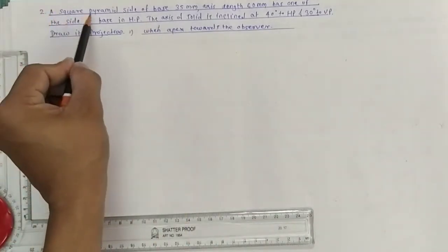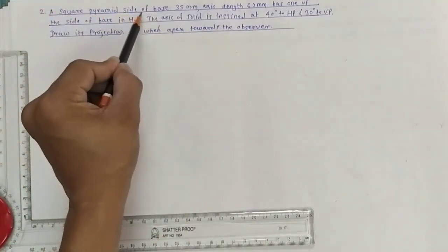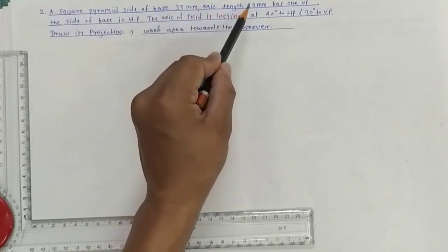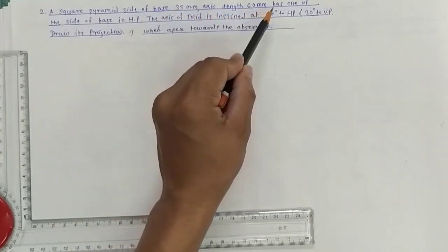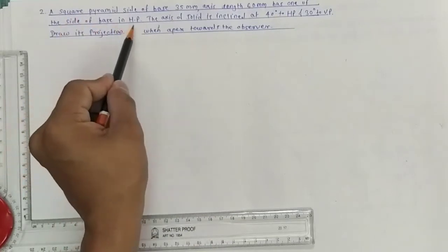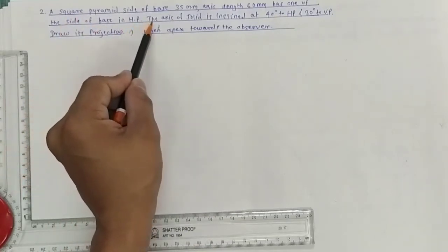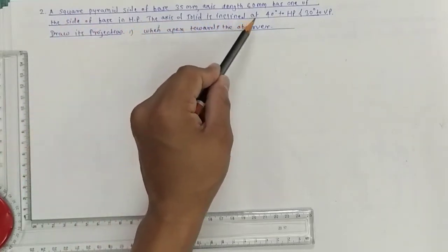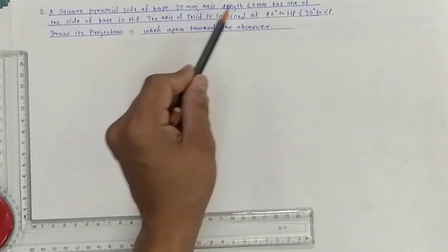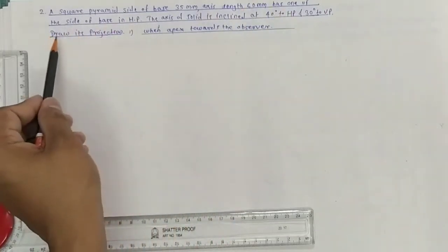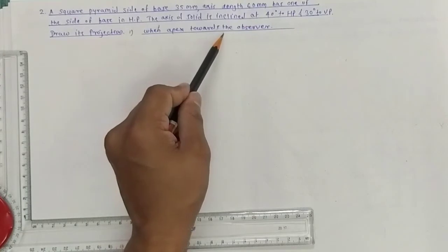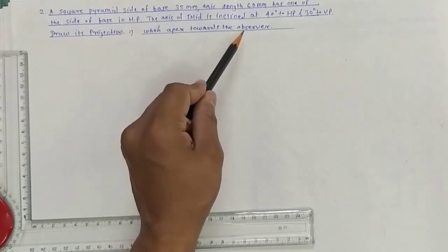A square pyramid with side of base 35 mm and axis length 60 mm has one of the sides of the base in HP. The axis of the solid is inclined at 40 degrees to HP and 30 degrees to VP. Draw its projection when the apex is towards the observer.